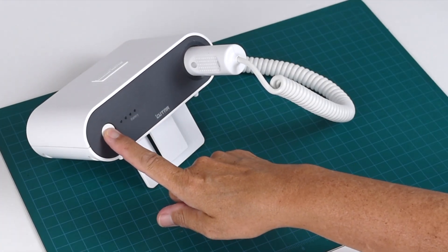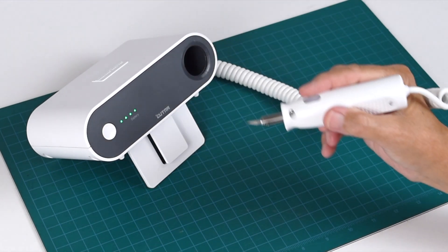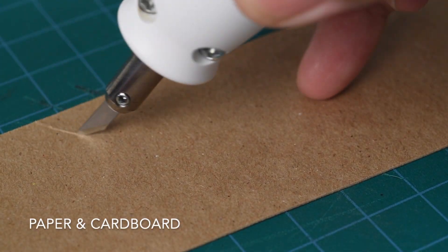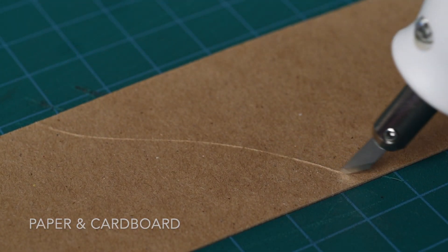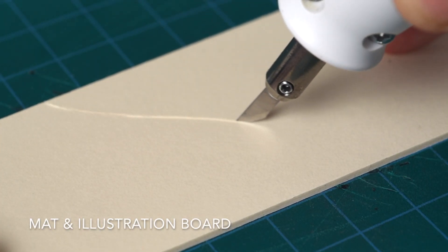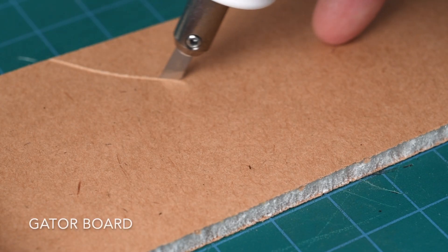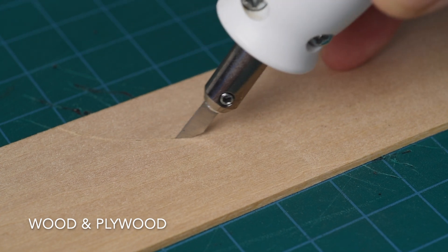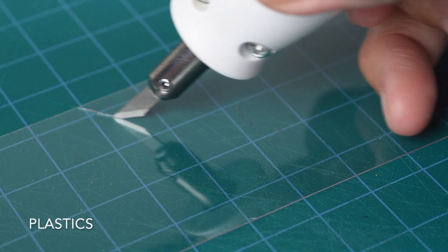Producing 40,000 ultrasonic vibrations per second, Wonder Cutter breezes through an amazing array of materials including paper and cardboard, mat and illustration board, gator board, wood and plywood, and plastics.